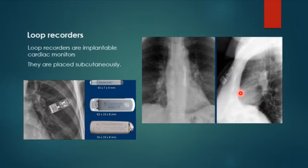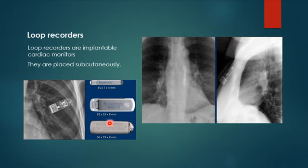There is a device called a loop recorder. It is implanted under the skin and is responsible for recording the cardiac rhythm in patients with unexplained palpitations and syncope. On imaging it appears very small, seen on both PA and lateral views as a subcutaneous device that transmits ECG data, possibly via Bluetooth.